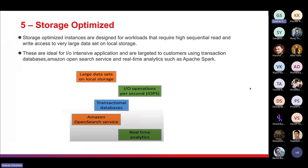The fifth category is storage optimized. Storage optimized instances are designed for workloads that require high sequential read and write access to very large data sets on local storage. These are ideal for I/O-intensive applications, targeted at customers using transactional databases, Amazon OpenSearch Service, and real-time analytics such as Apache Spark and traditional databases.